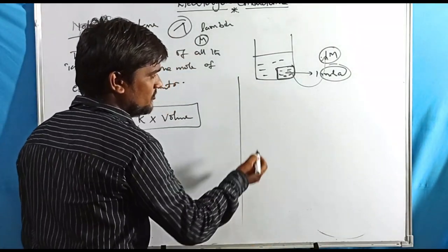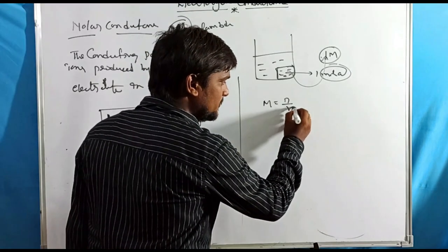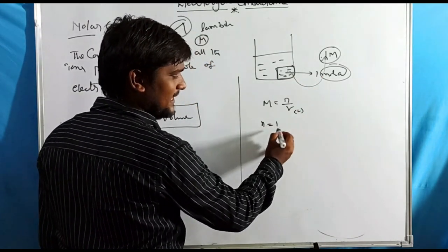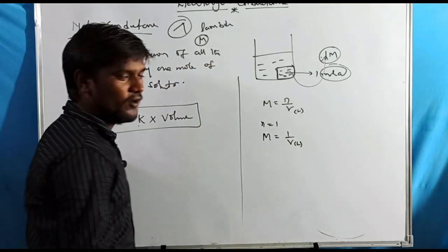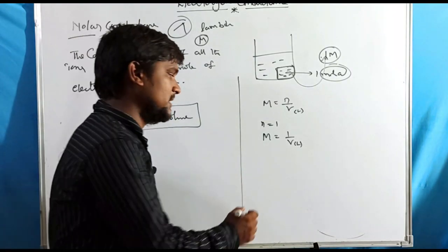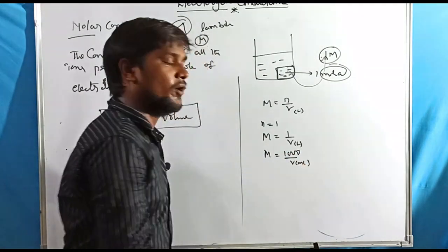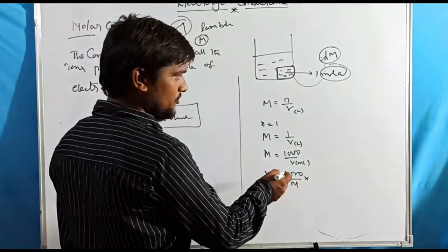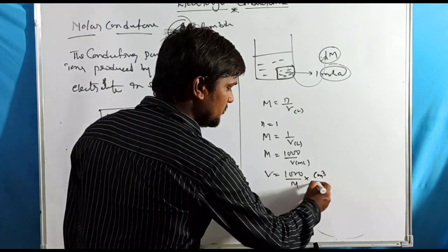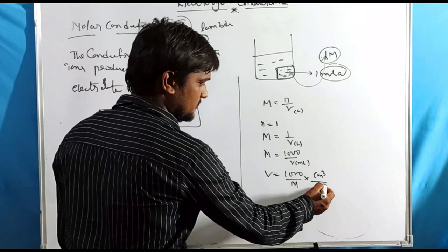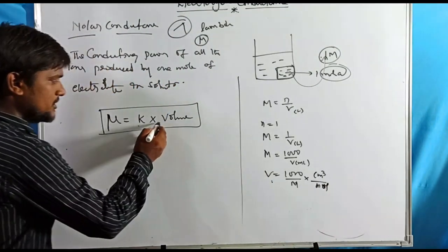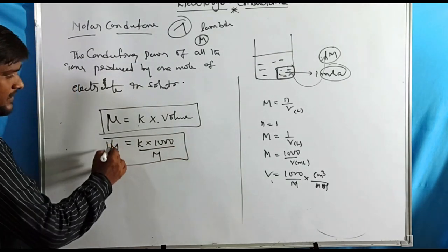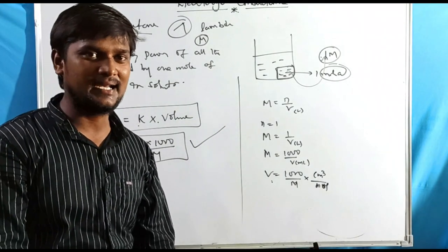Molarity M = number of moles / volume in liters. For one mole of solute, M = 1/V(liters), so V = 1/M liters. Converting to milliliters: V = 1000/M mL, and since 1 mL = 1 cm³, V = 1000/M cm³. Substituting into the formula: molar conductance μ = κ × 1000/M, where M is molarity.